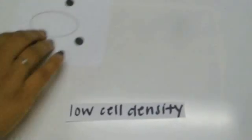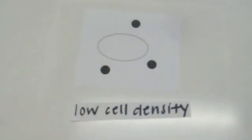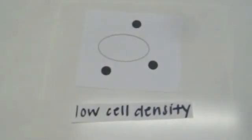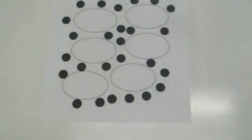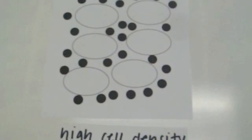When a bacteria is in a low cell density population, it still secretes auto-inducers, but the density of auto-inducers is lower. However, when several bacteria are in the same population, this is known as a high cell density population.